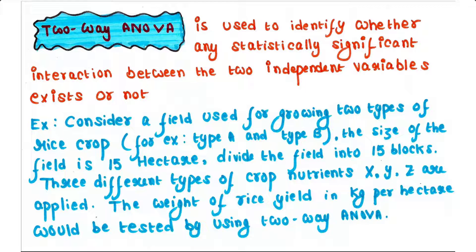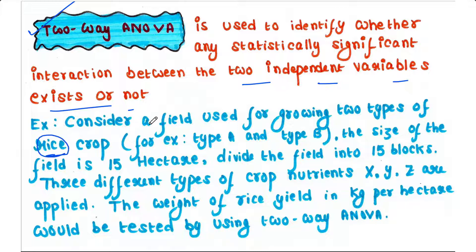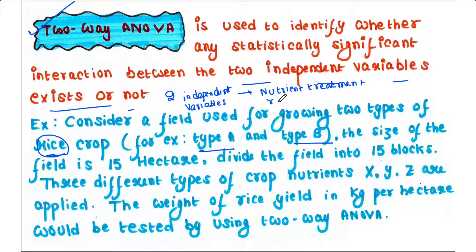Now let's talk about two-way ANOVA. A two-way ANOVA test is used to identify whether any statistically significant interaction between two independent variables exists. We take the same example but add an extra factor: two types of rice variety, type A and type B. That means we now have two independent variables — one is the nutrient treatment and the other is the rice variety.